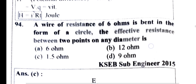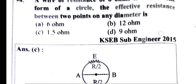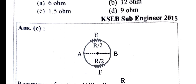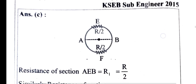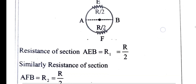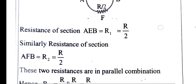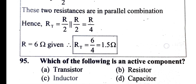A wire of resistance 6 ohm is bent in the form of a circle. The effective resistance between two diametrically opposite points: each half has resistance R/2, so we have two resistances of 3 ohm each in parallel. The equivalent resistance equals 6 divided by 4, giving 1.5 ohm.